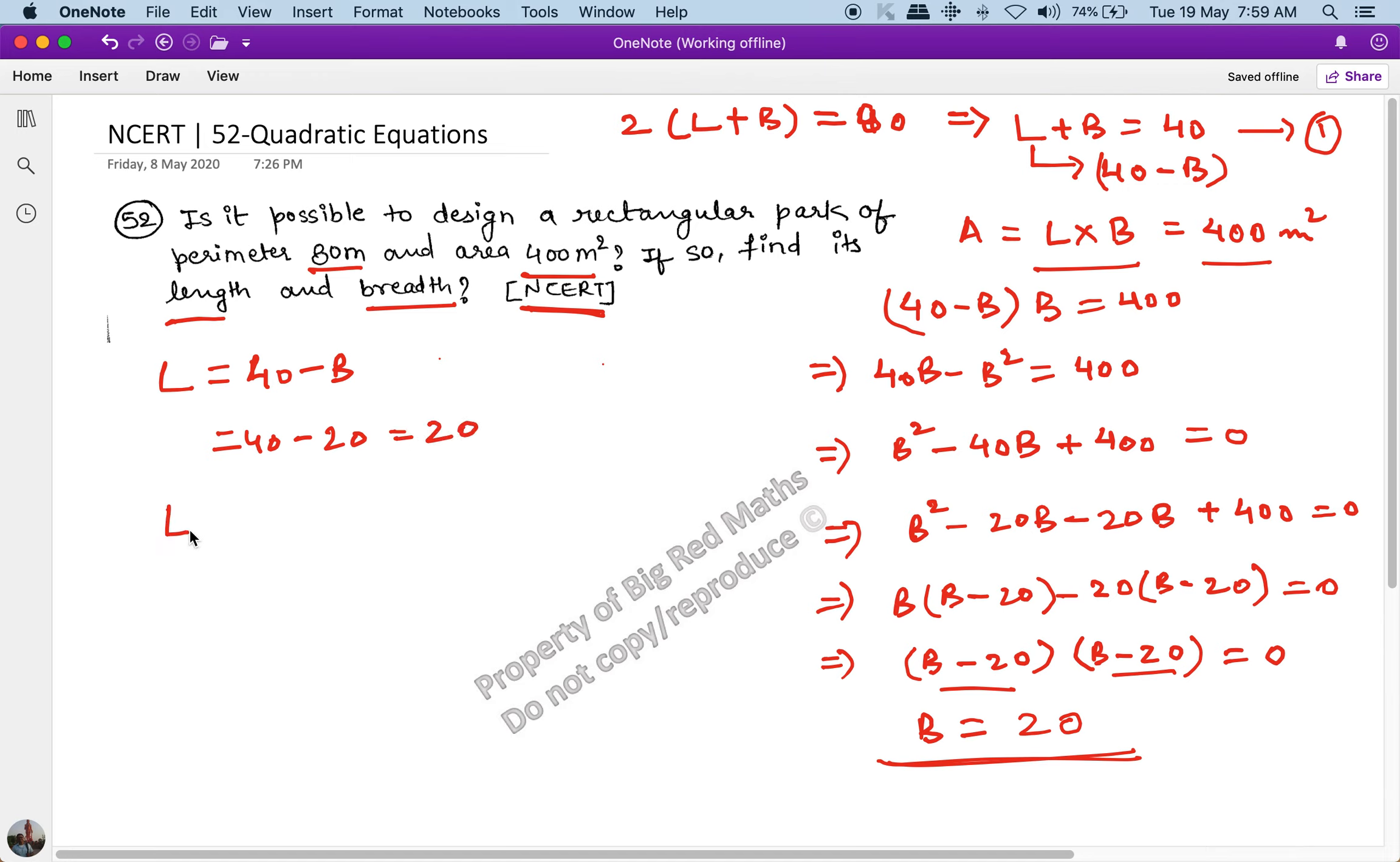So the length will become 40 minus 20, which equals 20. The final answer is that length equals breadth equals 20. So this rectangular field is actually a square field.